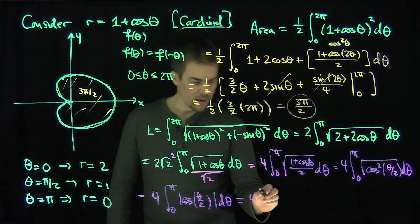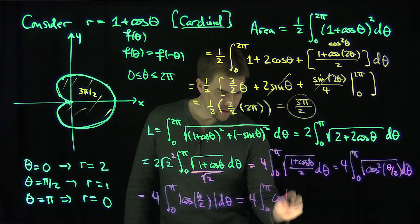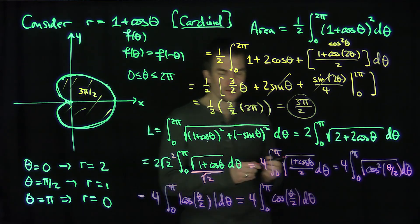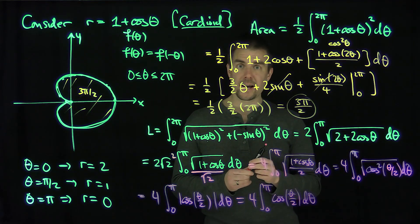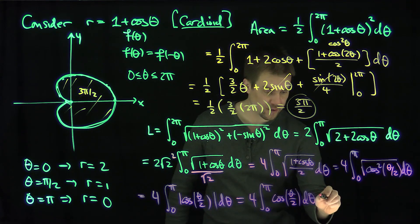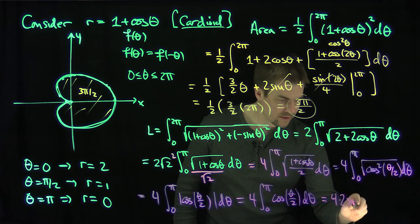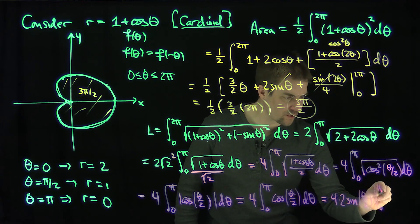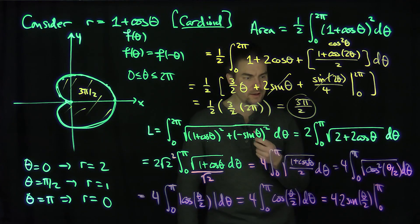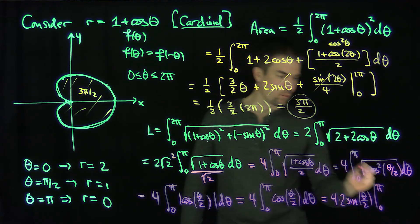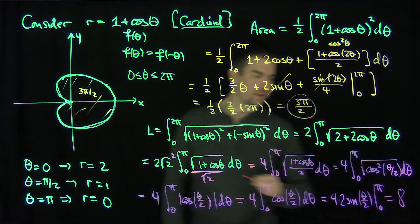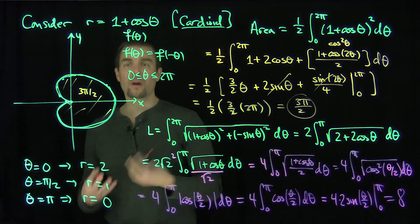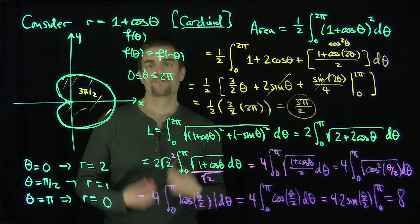This gives four times the integral from zero to pi of cosine of theta over two d theta. The antiderivative is two sine of theta over two, so we have four times two sine of theta over two evaluated from zero to pi. Plugging in pi gives one; plugging in zero gives zero. So the arc length of this cardioid is eight. To summarize: the area inside this cardioid is three pi over two, and the arc length of the cardioid is eight. Thank you very much.